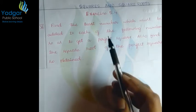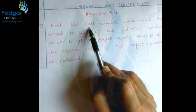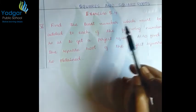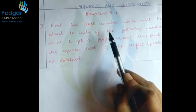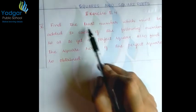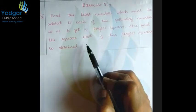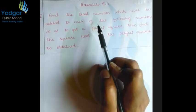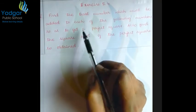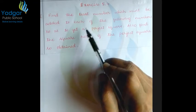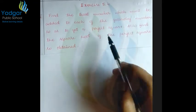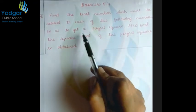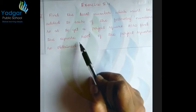Which means, you have to find the smallest number which must be added to the given question. After adding, find the square root of that number. That's all. Find the smallest number, add it to the question, and then find the square root of the resulting number.